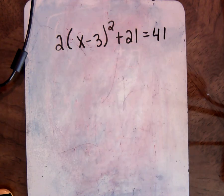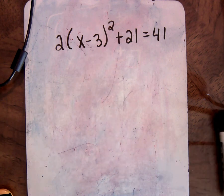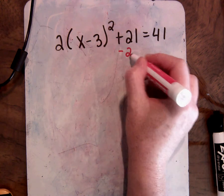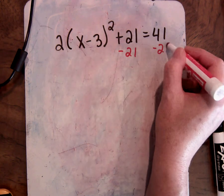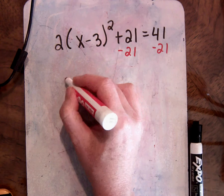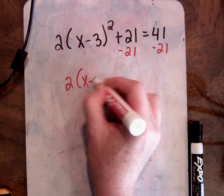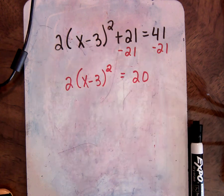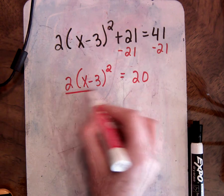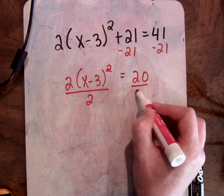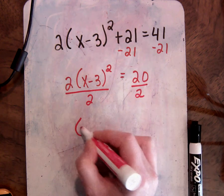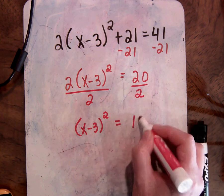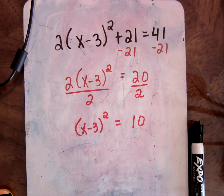Okay, so a little bit more complicated here. So, I hope that you're thinking we would first subtract 21. Just like if it were a two-step equation. Okay, so now our problem looks like that. And then I would divide by two. Gives me (x minus 3) squared equals 10. And now we're just down to that square of a binomial.